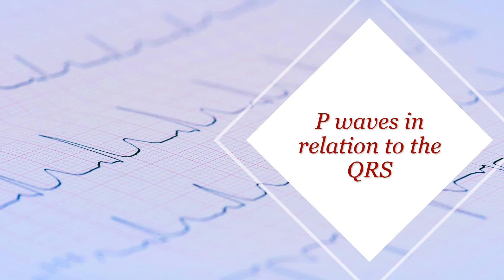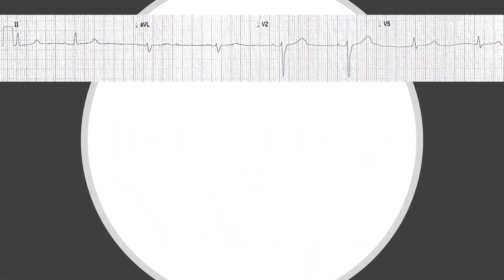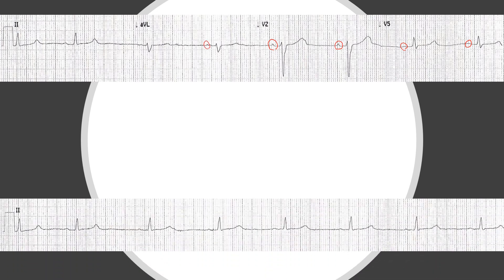Now we move on to the question we haven't addressed yet in our approach: what are the P waves doing with the QRS complexes? Looking at this part of the ECG, I think I can see only one P wave before each complex. Checking the rhythm strip of the same ECG, I don't really see more than one P wave before each complex, with a prolonged fixed PR interval of 204 milliseconds. So you could easily say we have a first degree heart block here.